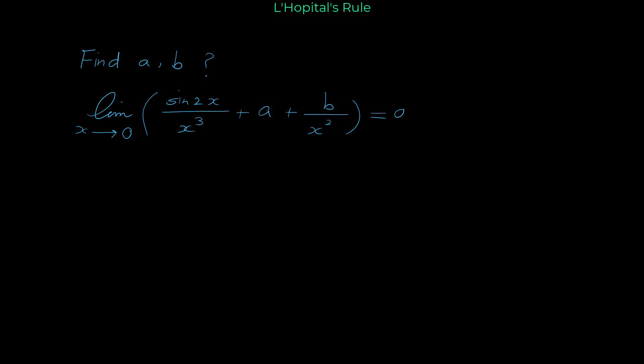In this video we want to do a question related to L'Hôpital's rule. Find a and b such that the limit of sine of 2x over x to the 3, plus a, plus b over x squared, as x approaches 0, equals 0.